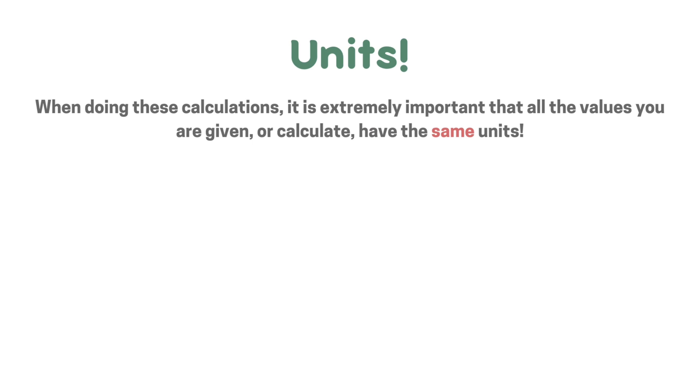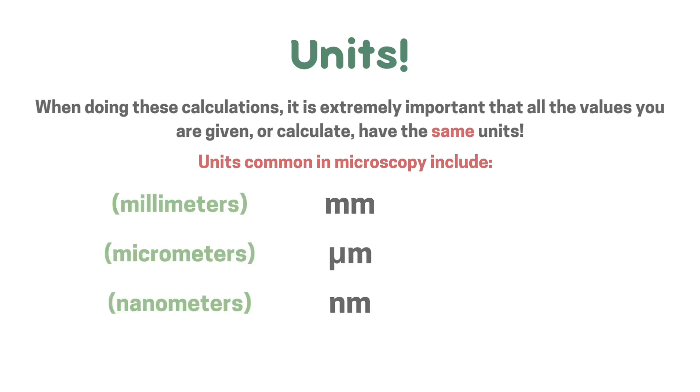When doing these calculations, it is extremely important that all the values you are given or calculate have the same units. Units common in microscopy include millimetres, micrometres and nanometres. To get from millimetres to micrometres you times by thousands and to get from micrometres to nanometres you also times by a thousand.